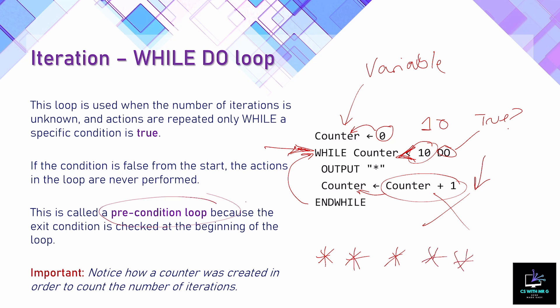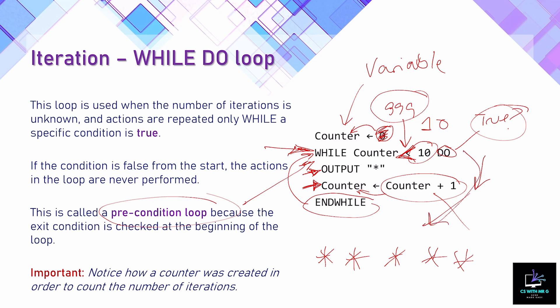Once counter reaches 10, the while condition at the top is no longer true — 10 is not less than 10, it's equal — so the loop ends. Pre means checks before the loop; the keyword is WHILE. Post condition is repeat until; precondition is while. We also need ENDWHILE at the close. The indented section implies the code inside the loop. Unlike the post condition loop, if counter were set to 999, the while loop's code would never run because the condition is checked first.